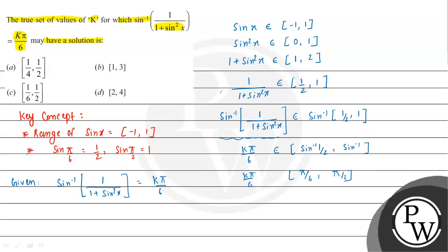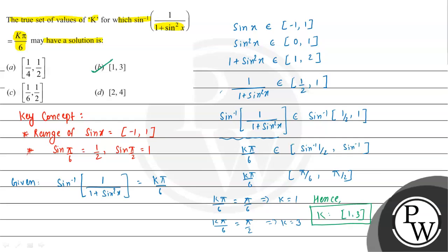Now comparing individually: k times pi/6 equal to pi/6 gives k equal to 1, and k times pi/6 equal to pi/2 gives k equal to 3. So finally the value of k belongs to {1, 2, 3}, that is from 1 to 3. This is the final answer. Looking at the options, option B is our correct choice. I hope you understood the solution — best of luck, thank you.